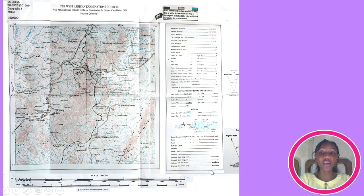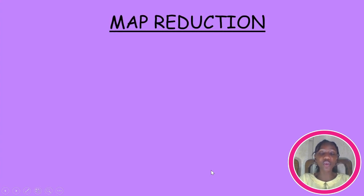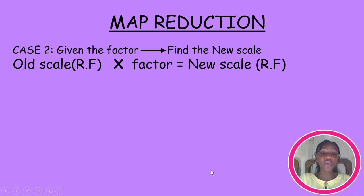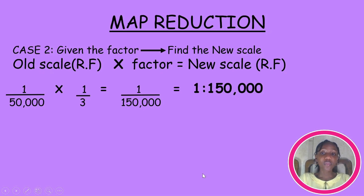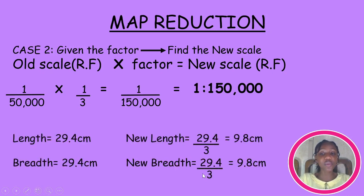Measuring our map, we get 29.4 cm by 29.4 cm. The new scale is calculated as old scale multiplied by the factor: 1:50,000 × (1/3) = 1:150,000. Remember that when a map reduces, the scale increases. To get the new dimensions, we multiply by 1/3, giving us 9.8 cm by 9.8 cm. For the grid, 10 by 10 boxes is perfect — divide the length and breadth of both maps by 10 to get each small box measurement. Draw the grid on both the original and new map.